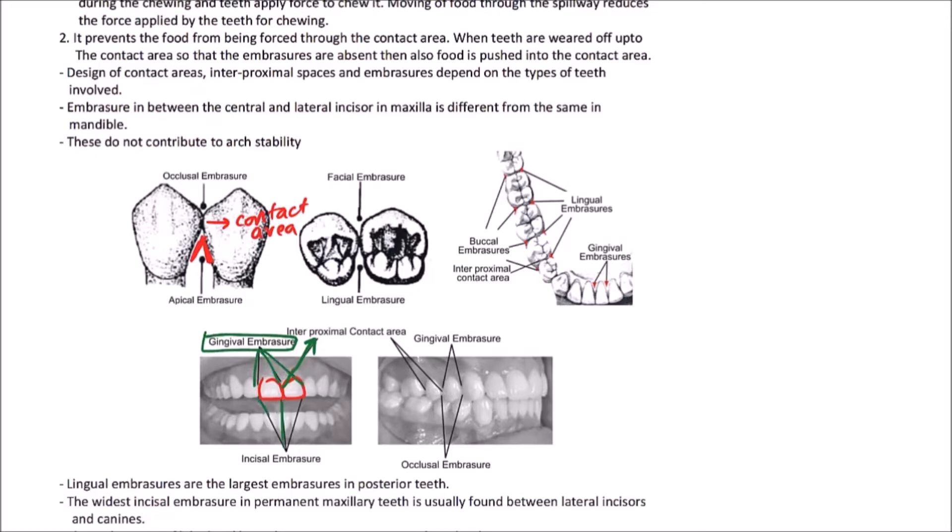While this is towards the incisal surface, these are incisal embracer. Now, if posterior teeth are taken in consideration, then this is a pair of teeth which is forming the embracer. This is the contact area and these are the gingival embraces and this is the occlusal embracer.